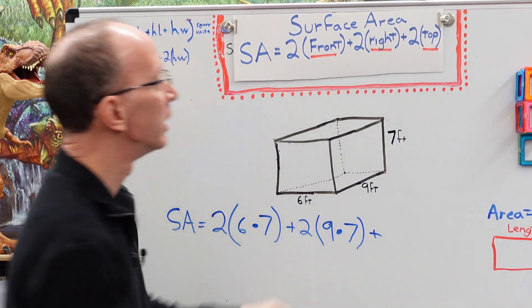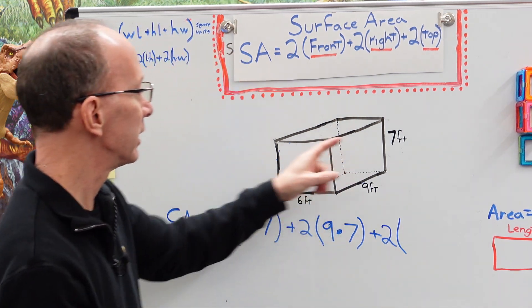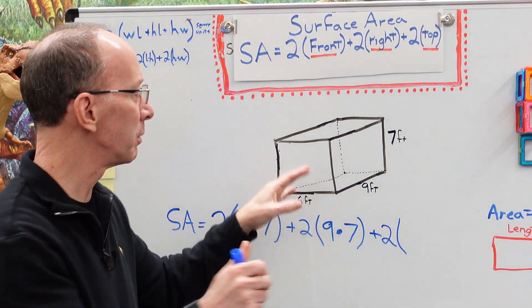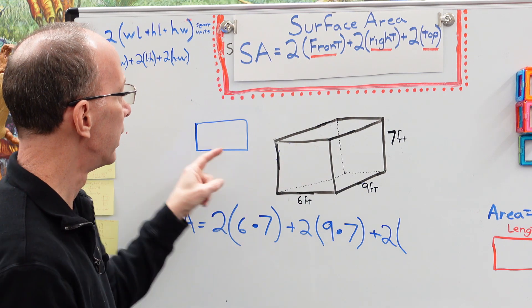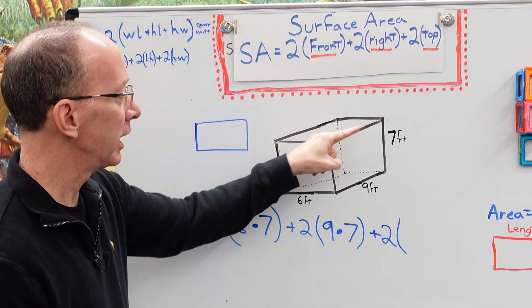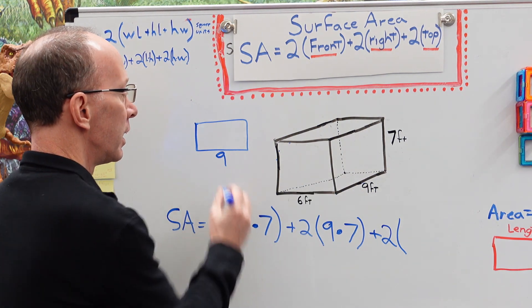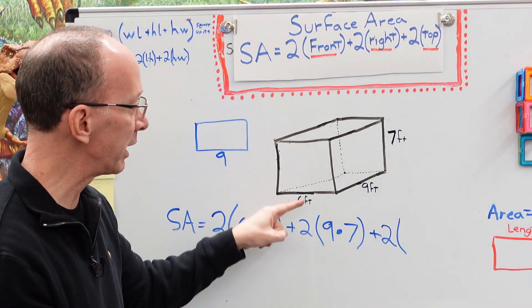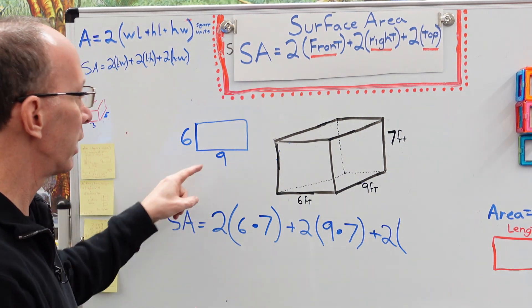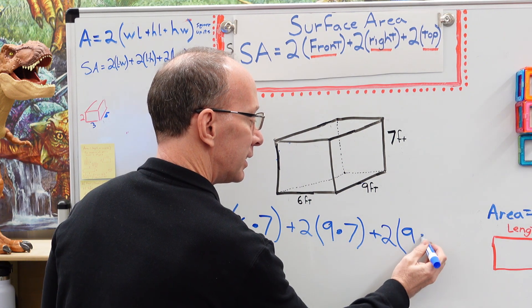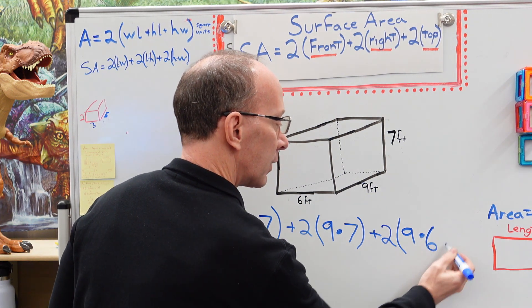And now we're going to do the top or the bottom. So I'm going to go ahead and put two times and this one right here if you get a little bit mixed up, all you have to do is pop that off of there and do your calculations right there. Now you'll see that this line segment right here is the same as this one down here. So that is nine feet. Okay, and this line segment right here is the same as this line segment right there and that is six feet. Okay, so I'm going to go ahead and put the length which is nine feet times six feet.